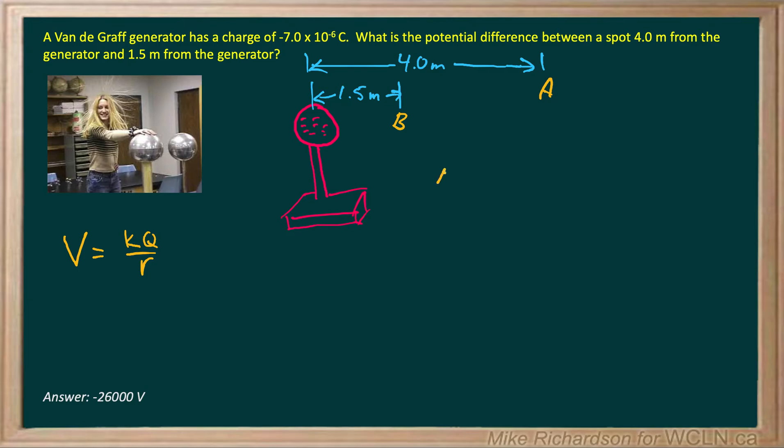So we're looking for change in voltage. Potential is voltage. Which is V final minus V initial. So it's going to be KQ over R final minus KQ over R initial.